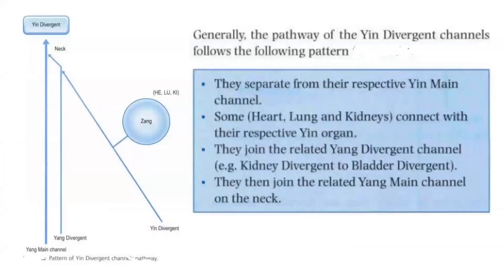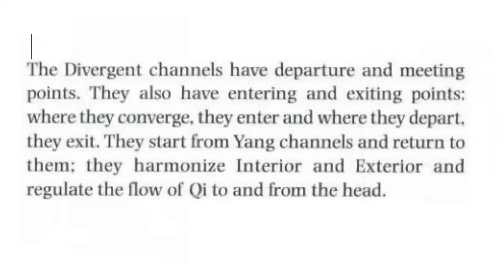Generally, the pathway of the yin divergent channels follows this pattern: they separate from their respective yin main channel; some — the heart, lung, and kidneys — connect with their respective yin organ; they join the related yang divergent channel (for example, kidney divergent joins bladder divergent); they then join the related yang main channel on the neck. The divergent channels have departure and meeting points, as well as entering and exiting points — where they converge, they enter, and where they depart, they exit. They start from yang channels and return to them, harmonizing interior and exterior and regulating the flow of Qi to and from the head.